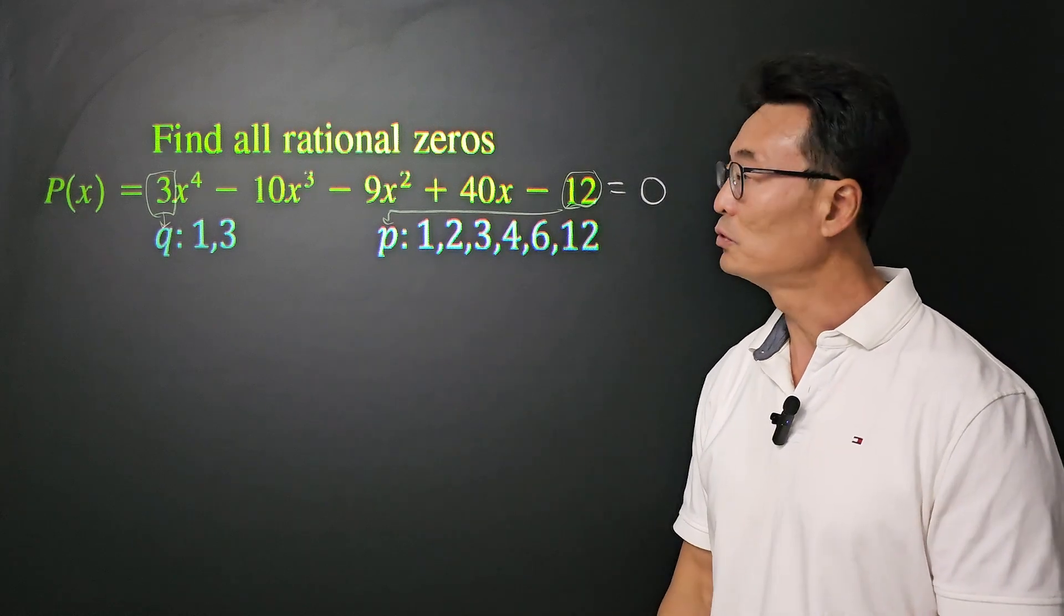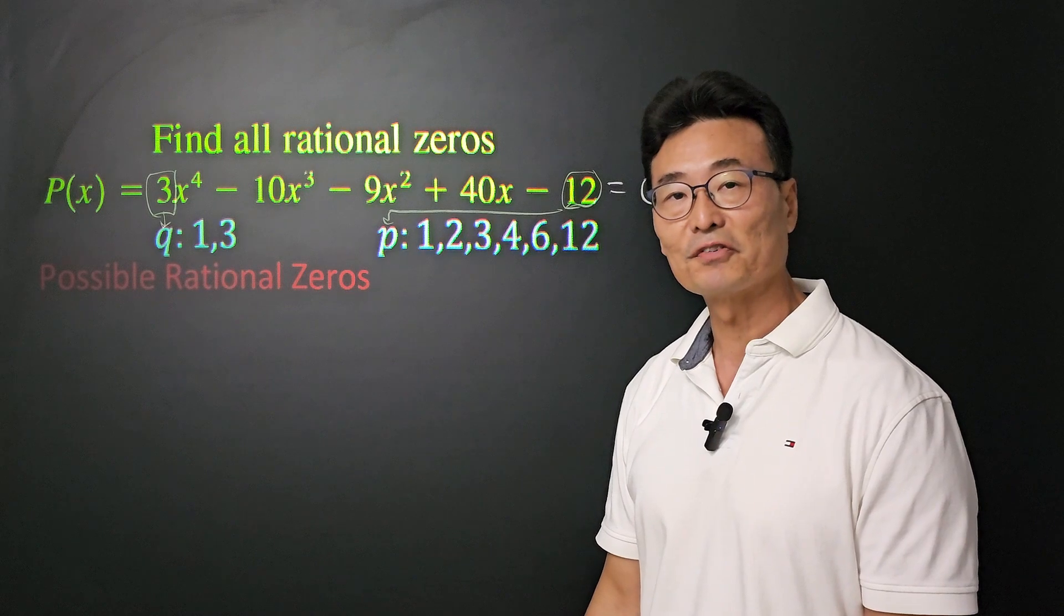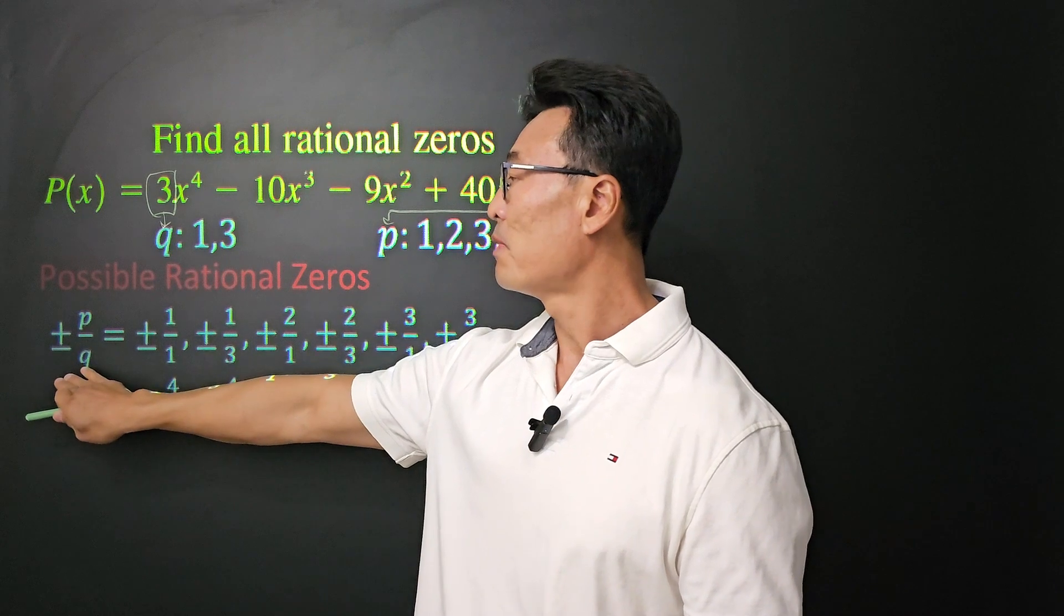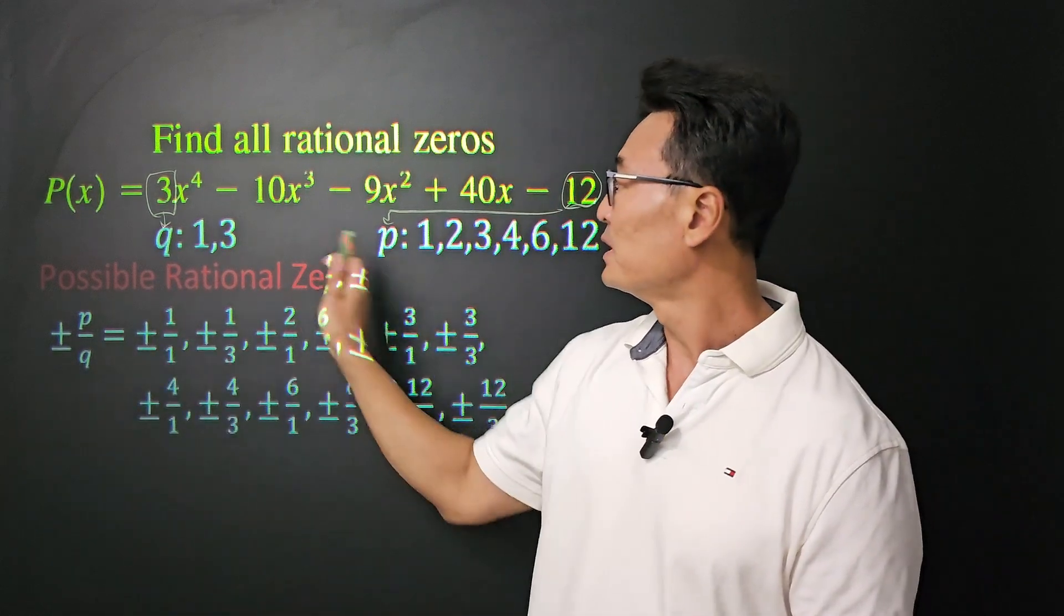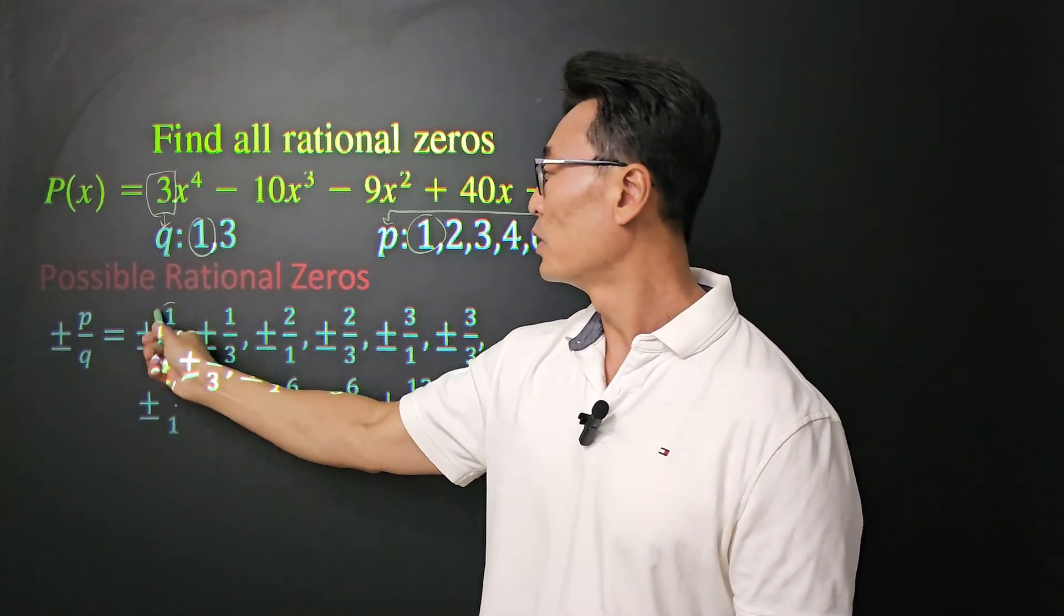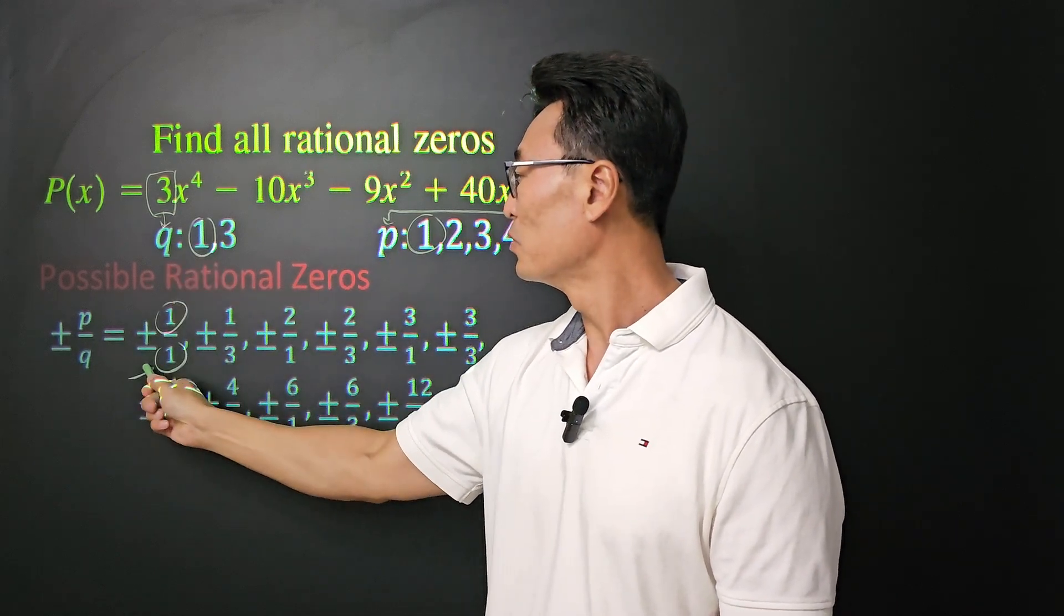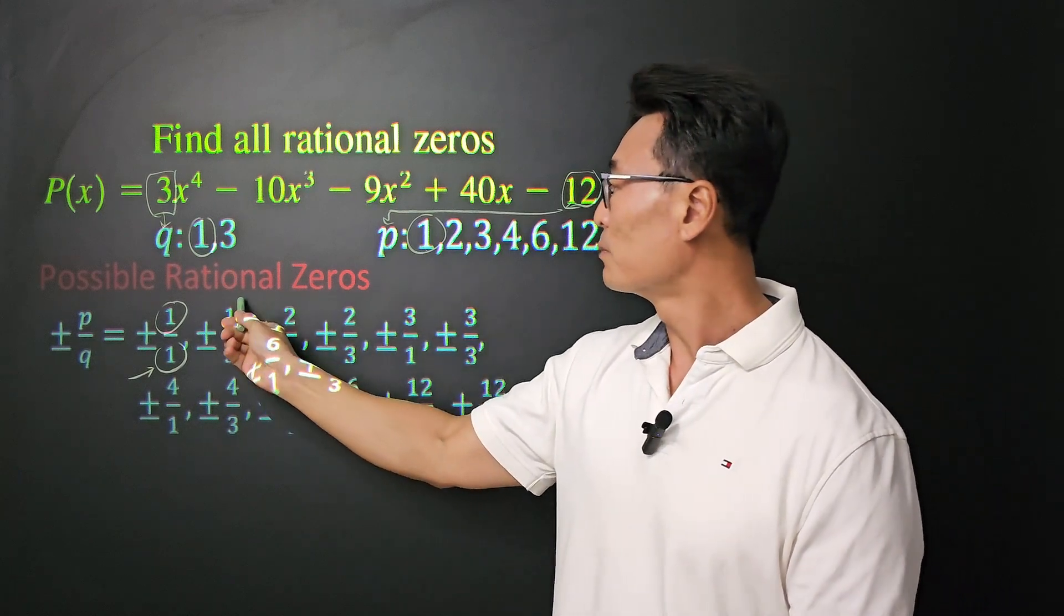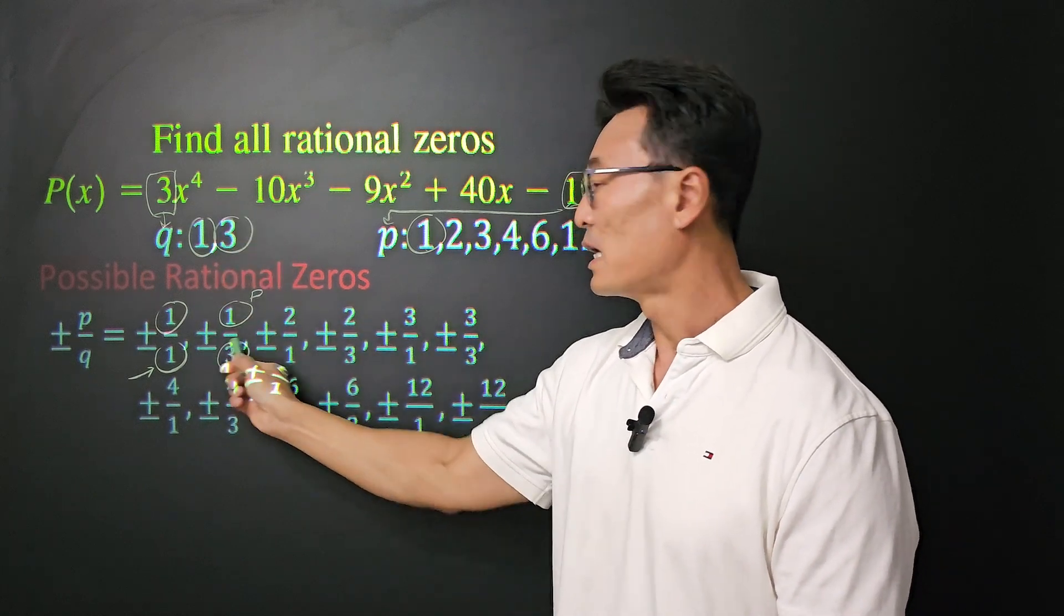Then, using the values of p and q, we're going to be finding the possible rational zeros. And to do that, we're going to be doing plus minus p over q. All the combinations that we have of p and the q's. Notice the 1 goes on the top from the p, and then 1 from the q goes in the denominator. While keeping the 1 in the numerator, we now have the 3 in the denominator.